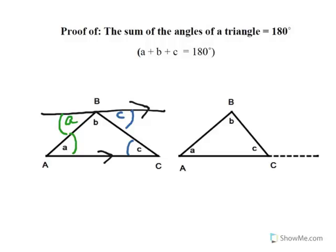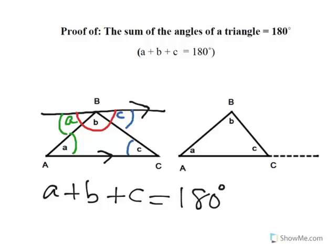We can now see very clearly that the three angles, A, B and C, add up to 180 because they're in a straight line and they share the point B in common. So we can write A plus B plus C equals 180 degrees, which is what we set out to prove.